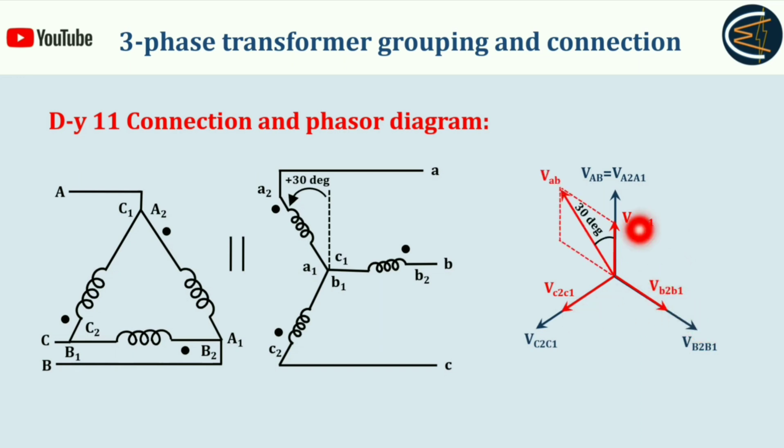The corresponding line voltage V small ab will be this. This is the resultant, and as you can see, V small ab is leading by 30 degrees with respect to V capital AB. Hence proved, this is DY11